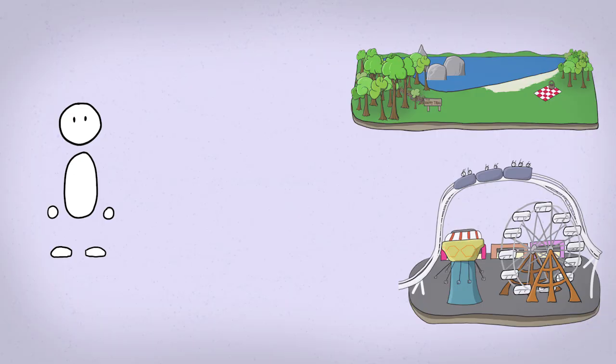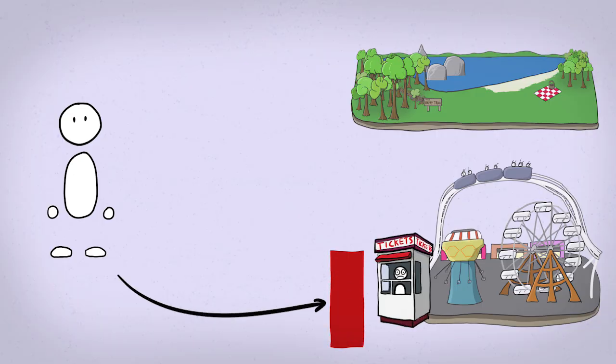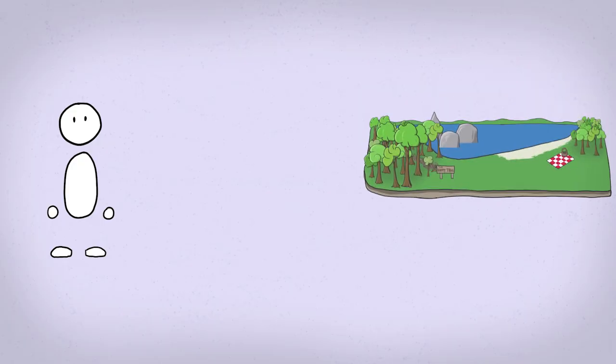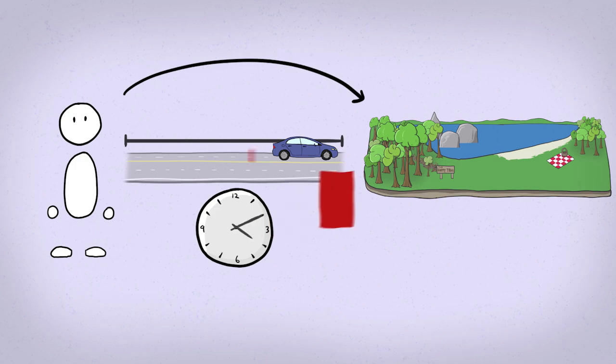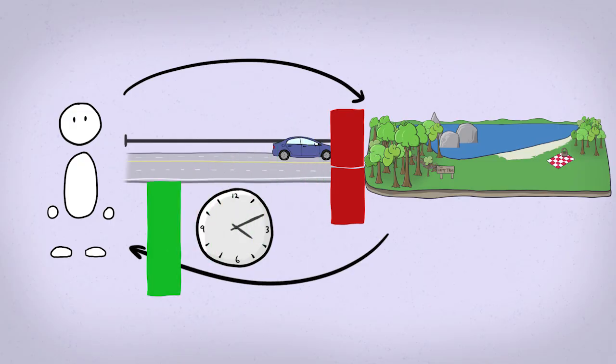While nature doesn't charge you for a beach the same way you're charged for an amusement park, there are some indirect costs involved. You have to spend money getting there - bus fare, fuel, car upkeep - and you'll have an opportunity cost on your time. These are the economic costs of travel. So if people treat travel costs the same way they would treat a ticket price, then we know they feel they're getting at least that much value from the experience.